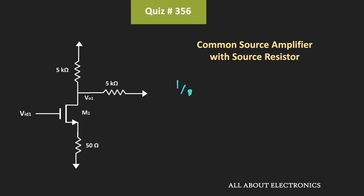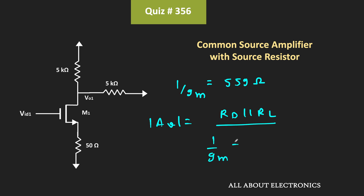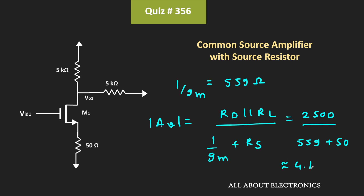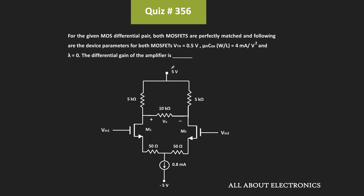If you see 1/Gm, then this 1/Gm will be roughly equal to 559 Ω. The voltage gain is equal to (Rd parallel Rl) divided by (1/Gm + Rs). Here Rd and Rl are both 5 kΩ, so the parallel combination equals 2.5 kΩ, which is 2500 Ω. This 1/Gm is 559 Ω, while Rs equals 50 Ω. If we calculate the voltage gain, it comes out to approximately 4.1. The differential gain of this differential amplifier is also equal to 4.1. Thank you.